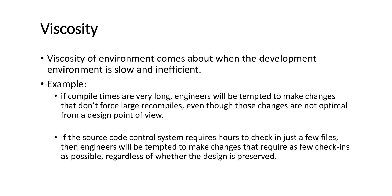A second example: if the source code control system requires lengthy hours for check-in — where check-in means pushing data into storage and check-out means pulling it out — engineers will make changes that require only a few check-ins. They will touch only certain important files and skip others, regardless of whether the design is preserved. In all such cases, we can say the viscosity of the environment is very high.